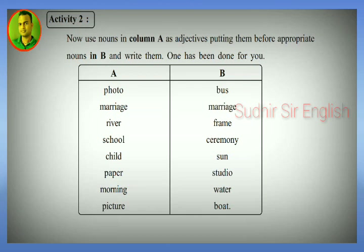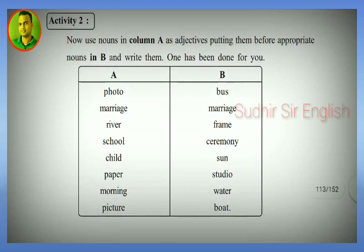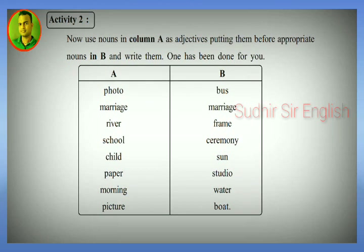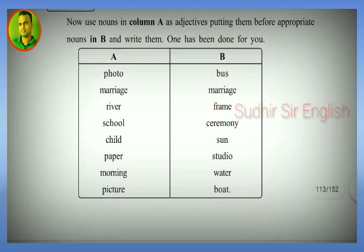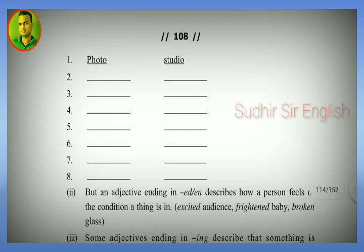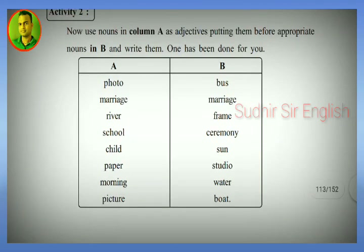Try the answers in the comments. Examples of noun classifiers: photo studio, marriage ceremony, river water, school bus, child marriage, paper boat, morning sun, picture frame. Write your answers.